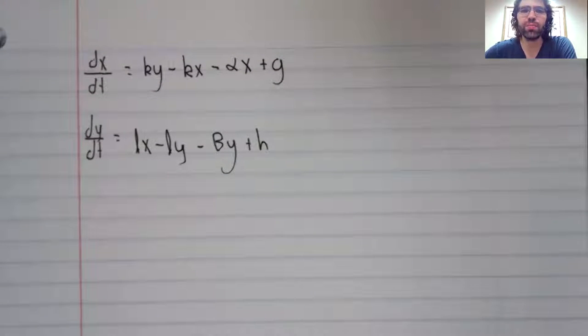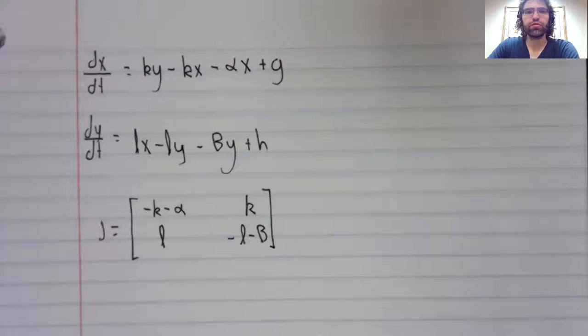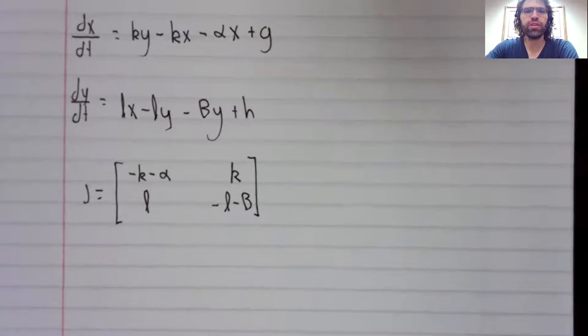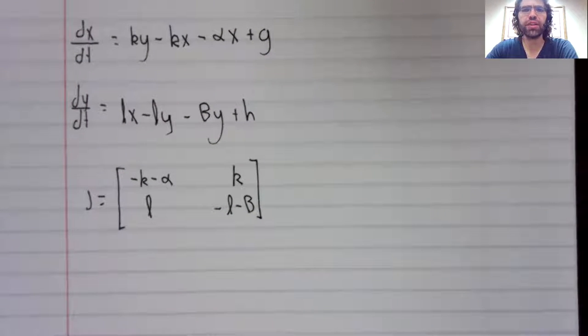Finding the fixed point is just an algebra problem. Finding the Jacobian is straightforward. Nobody struggled with that on the test.